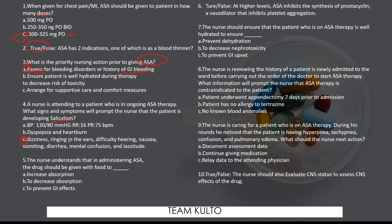Number six: True or false — at higher levels, aspirin inhibits the synthesis of prostacycline, a vasodilator that inhibits platelet aggregation. The answer is true. Number seven: The nurse should ensure the patient on aspirin therapy is well hydrated to ensure decreased nephrotoxicity. Aspirin is excreted through urine, so hydration promotes and facilitates excretion.